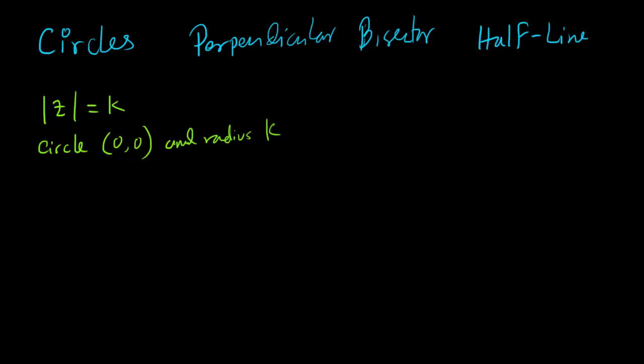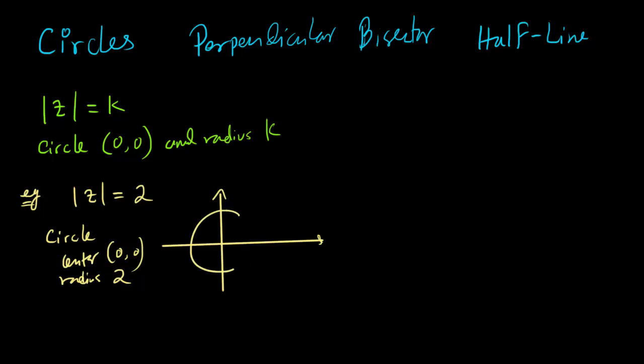Here is a question. Suppose you have modulus of z equals to 2. You have to write down what it is and you have to sketch it. So we know it is a circle whose center is (0,0) and whose radius is 2. So if you have to sketch it, it would be like this.